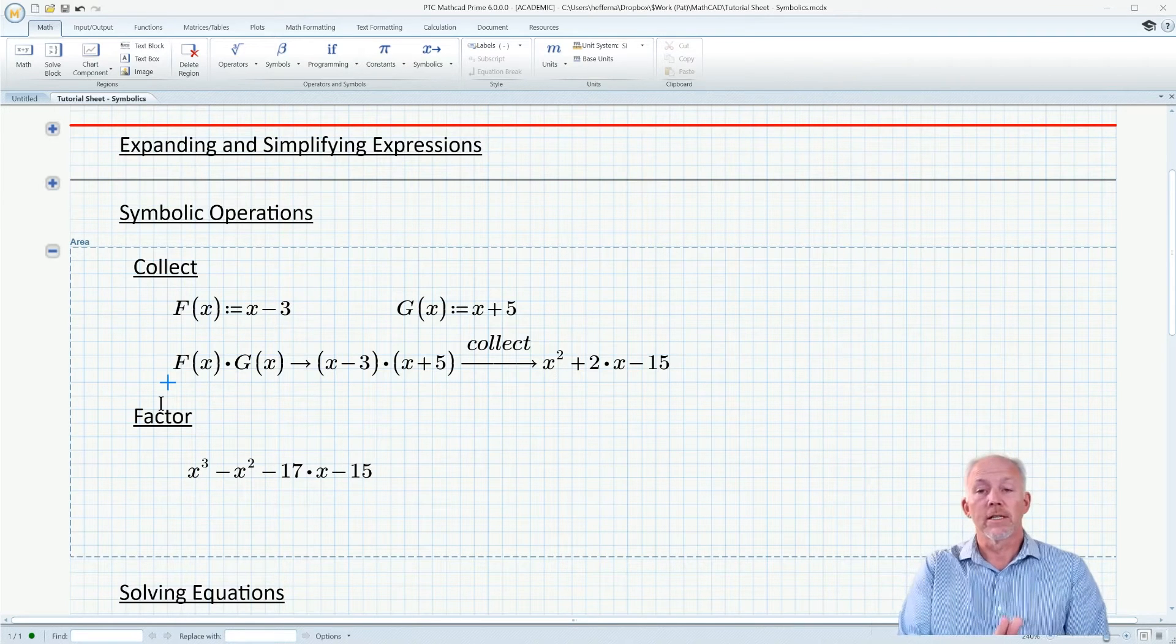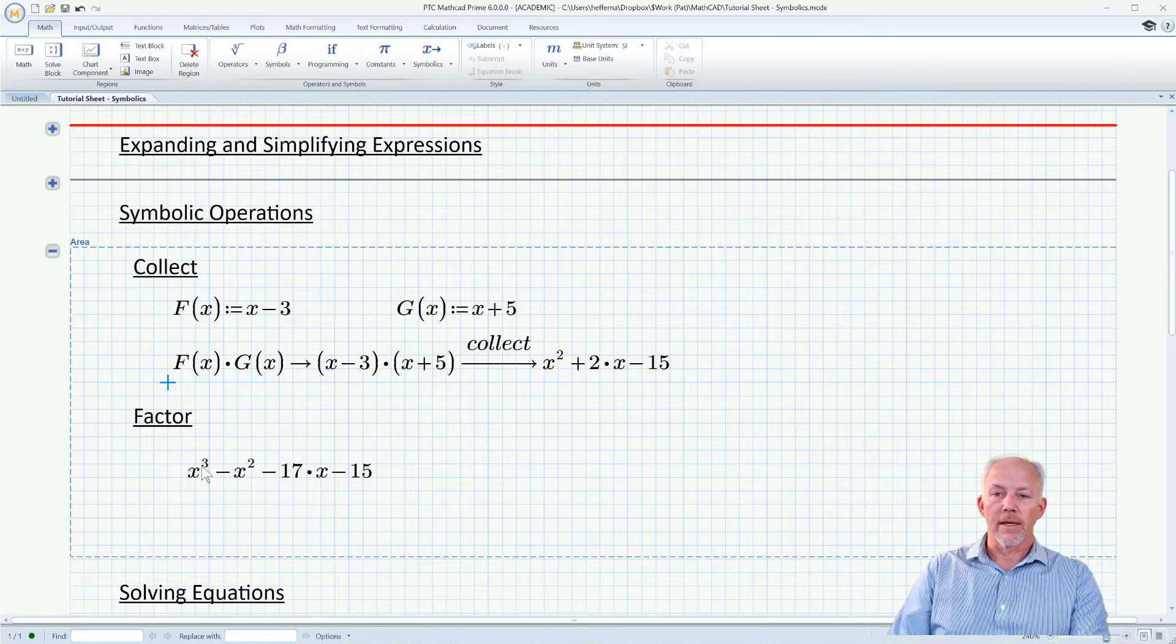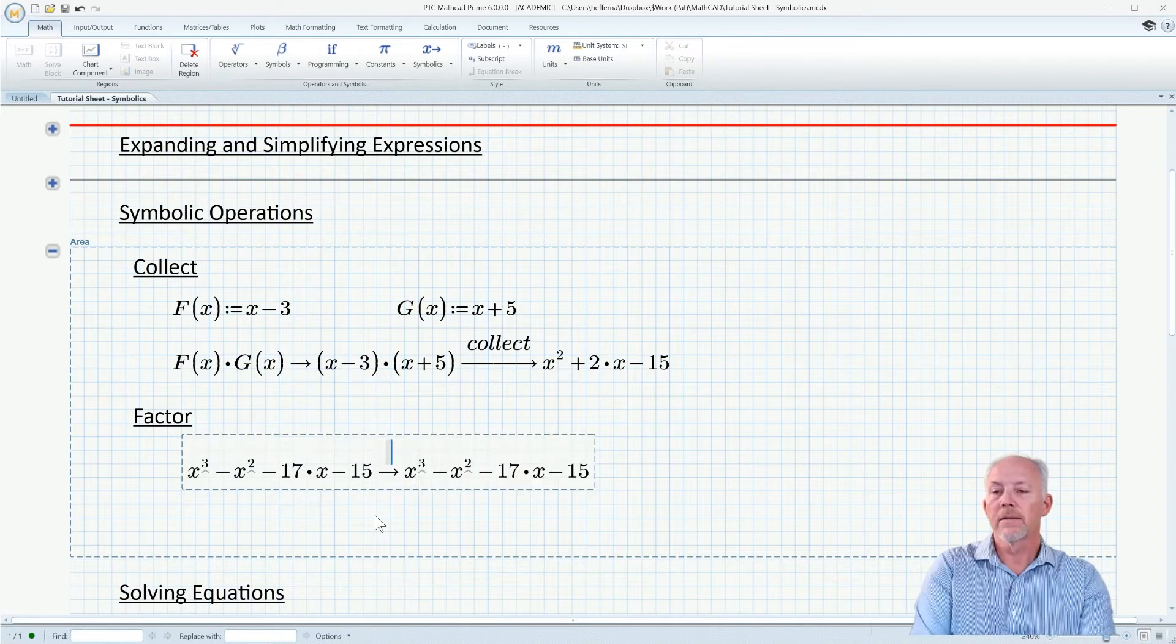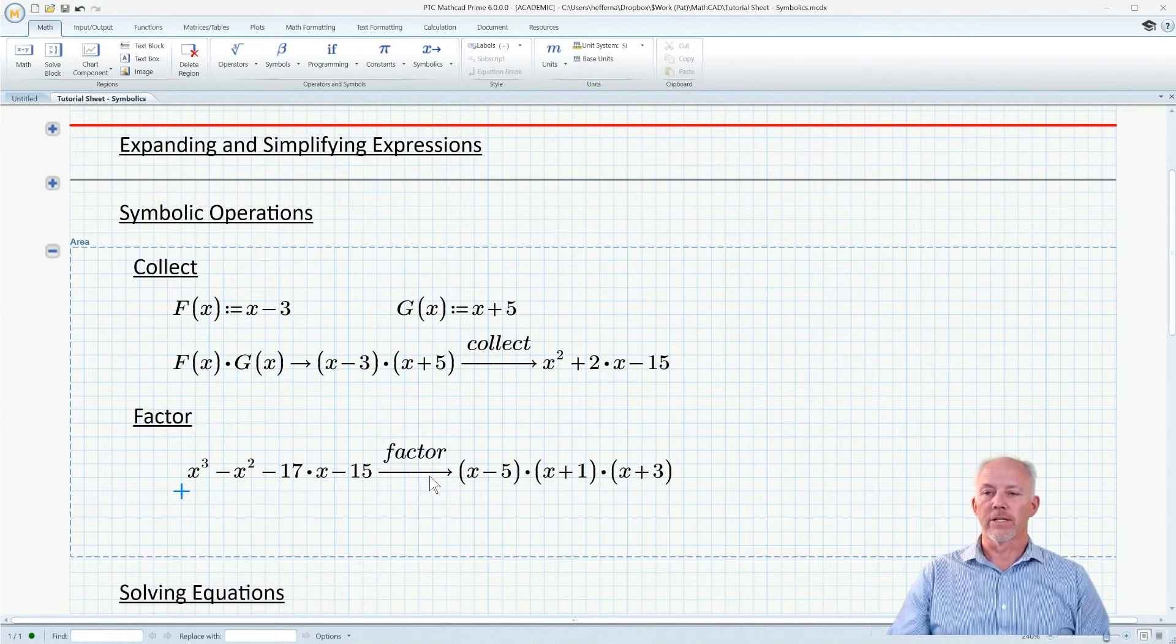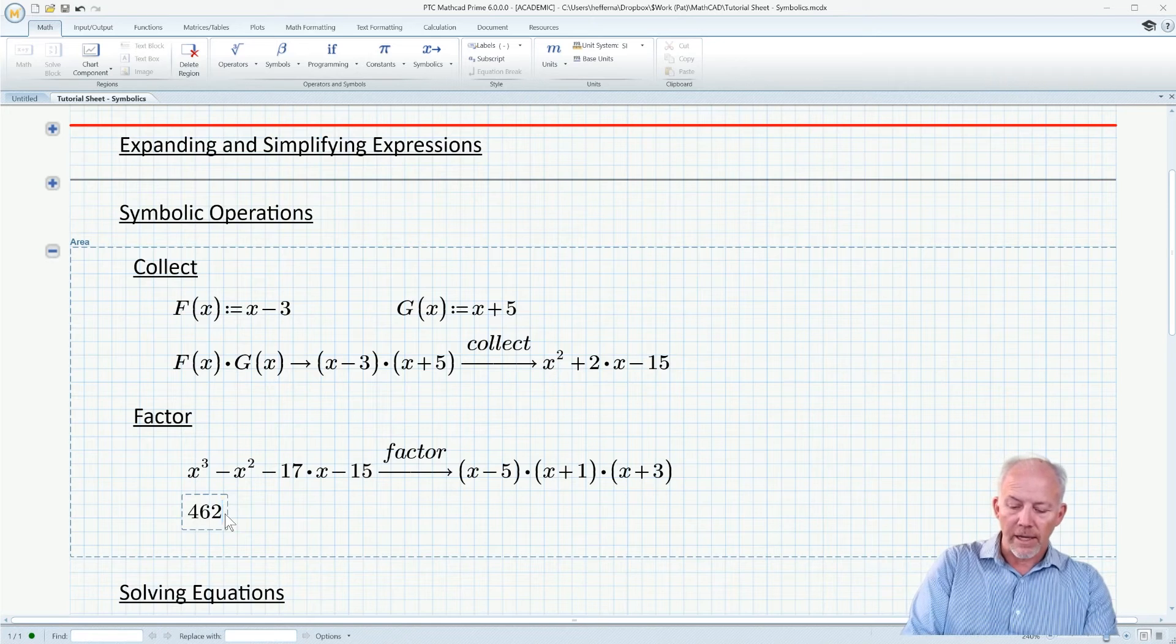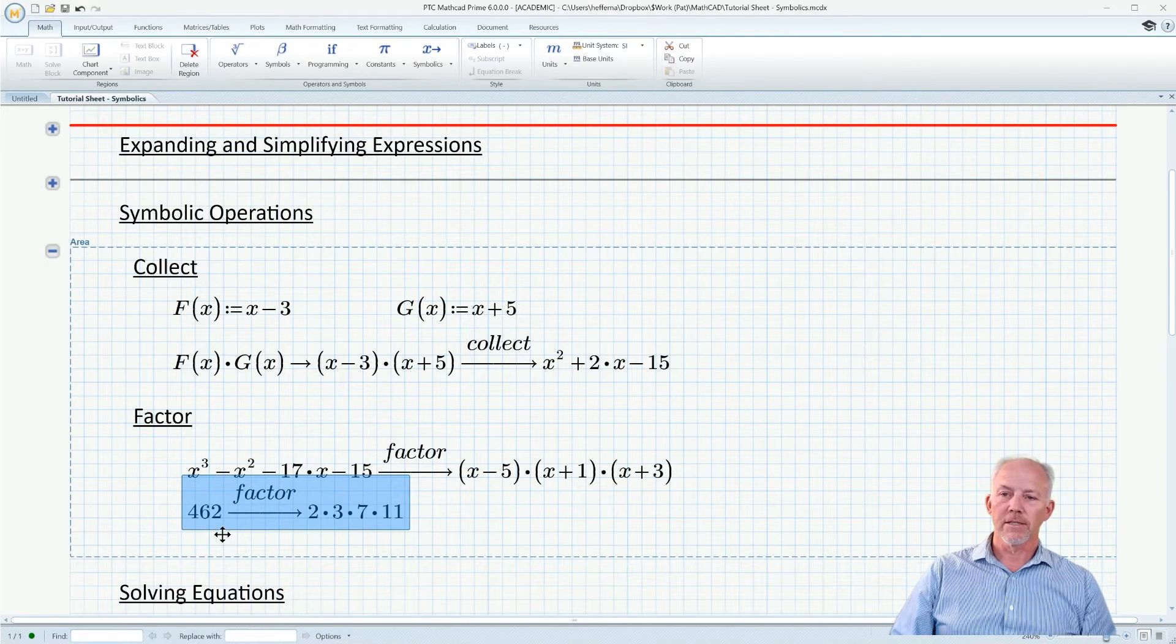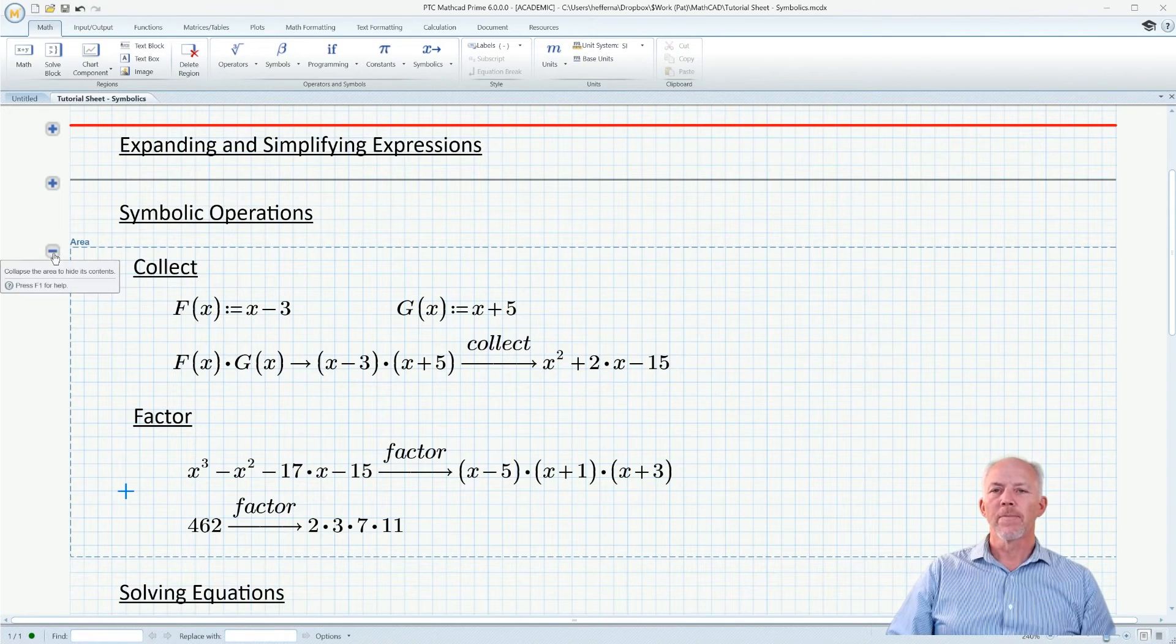One more function to consider that might be useful is to factor something. Here we have an equation laid out in terms of like order, and perhaps what we want to do is factor that. We can use control period, and if we choose to factor it, then it will give us the simplest form of the equation and its factors. That also works for numbers. If I choose a number, use 462, and we engage the symbolic solver and tell it we want to factor it, it will come back with the factors for 462, which can be hugely useful.